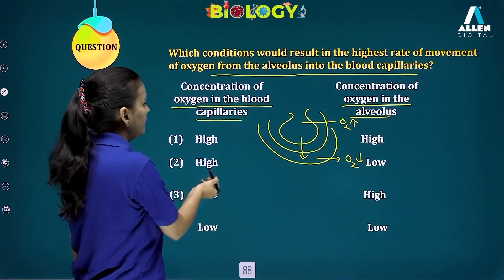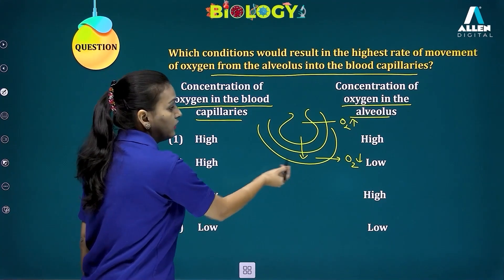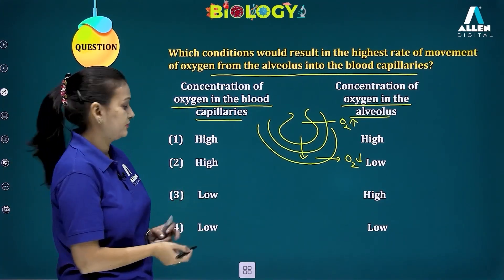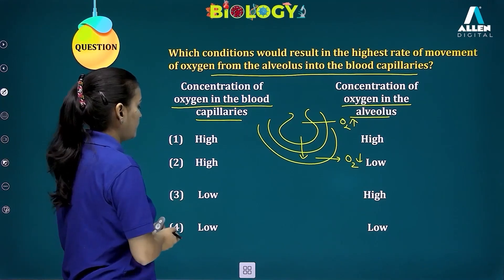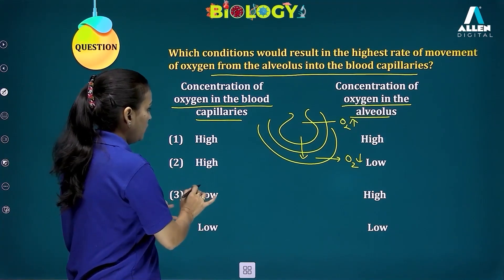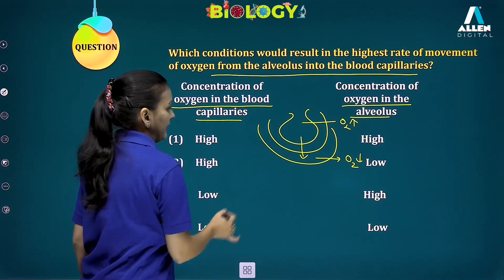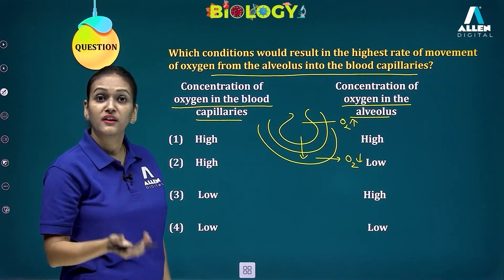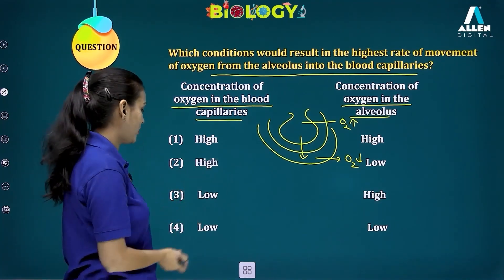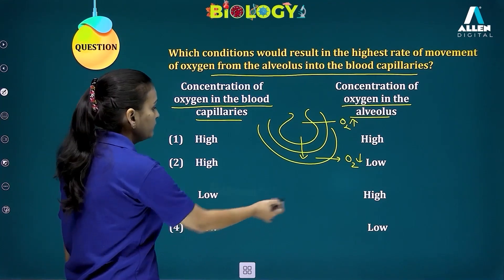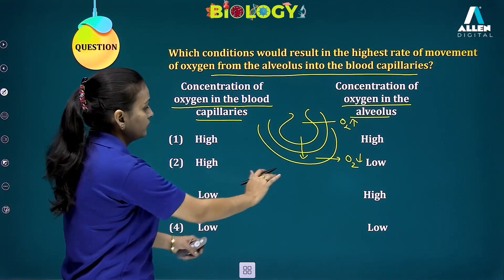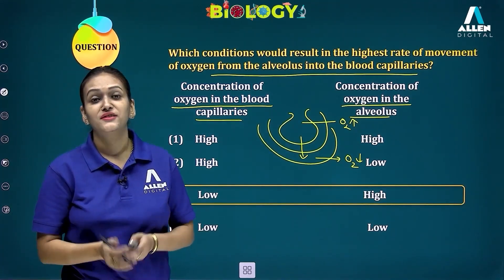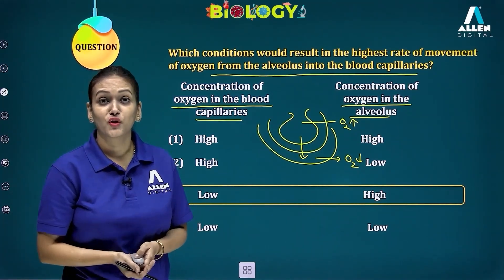Option two is actually the reverse of what is needed — it says high in blood, which is wrong. Option three says low in blood and high in alveolar space — that is correct, this is the right option. Option four says both low — that cannot be the answer. So the third option is the correct answer.